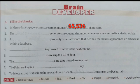Second question: The blank generates a sequential number whenever a new record is added to a table. Which data type automatically generates a sequential number when we add a new record to the table? This is AutoNumber data type, so the right answer is AutoNumber.